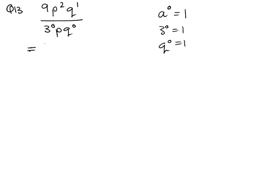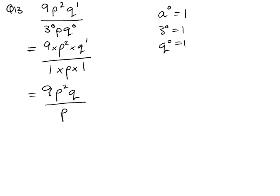So if I rewrite this, it's 9 times p squared times q to the power of 1, all over 1 times p times 1. So it's 9p squared q all over p, and this p's power is 1.